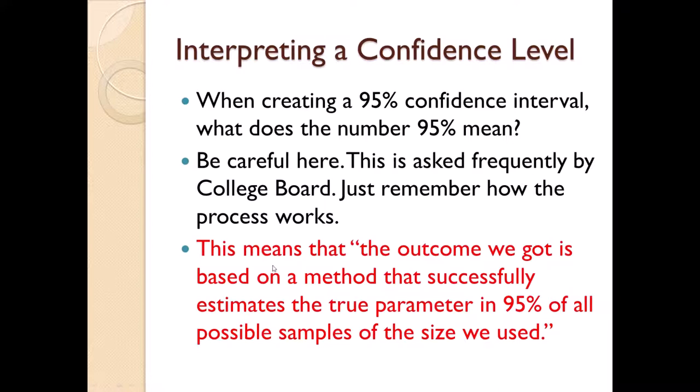So this means that the outcome we got is based on a method. It's the method that is successful at this rate. It's based on a method that successfully estimates the true parameter in 95% of all possible samples of the size we used. So if there are billions upon billions of samples of size 35 for estimating the true height of women, out of all of those possible samples, we'll get a confidence interval for each one. And 95% of them will have worked and capture the true parameter, and 5% will just be a fail. So it's the process that is successful at this rate.